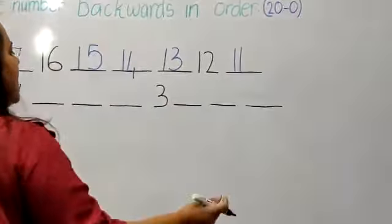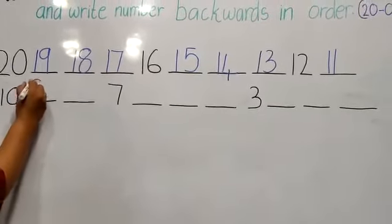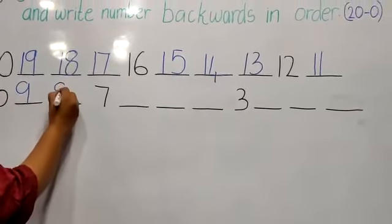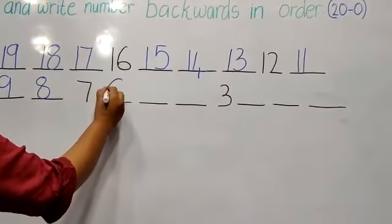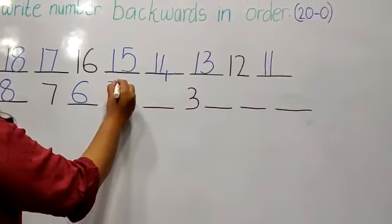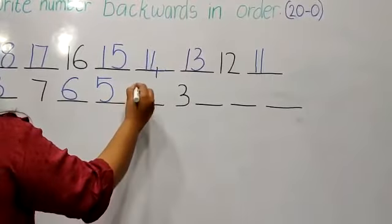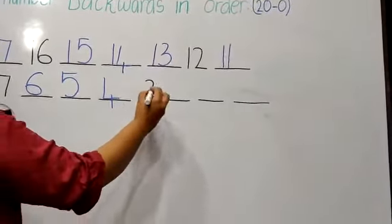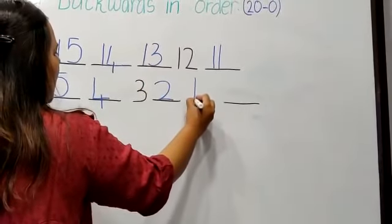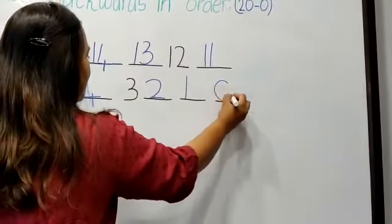Now we go to our next line. Here we start from number 10. So 10, 9, 8, 7, 6, 5, 4, 3, 2, 1, 0.